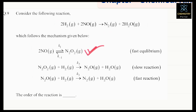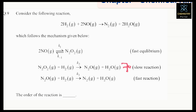The first step is: 2NO(g) → N₂O₂(g), and this step is a fast equilibrium. The second step is: N₂O₂(g) + H₂(g) → N₂O(g) + H₂O(g), and this step is the slow reaction. The third step is: N₂O(g) + H₂(g) → N₂(g) + H₂O(g), and this step is a fast reaction.